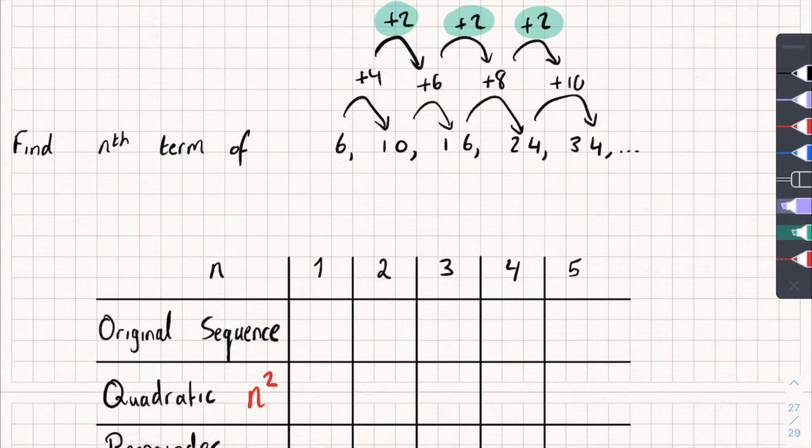Here, original sequence, all I'm going to do is write in the original sequence, so 6, 10, 16, 24, 34. To be honest, you probably don't need to go all the way from n equals 1 to 5, but I've just done it, because why not?